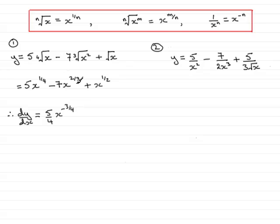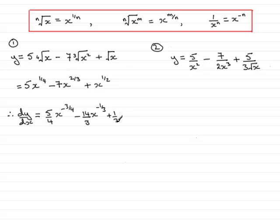And if we do that similarly for the other two terms, we're going to have minus 14 over 3. Reduce the power by 1, so it's x to the minus a third. And for the last term, remember that's a 1 there. So we have 1 times a half, which is a half. And reduce the power by 1, so it's x to the minus a half.